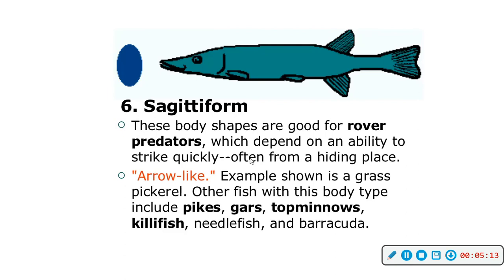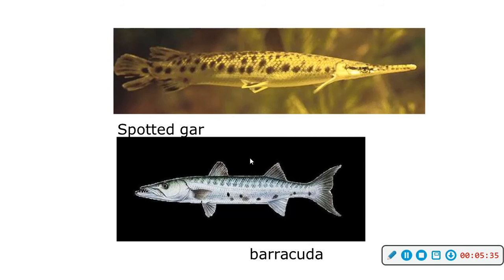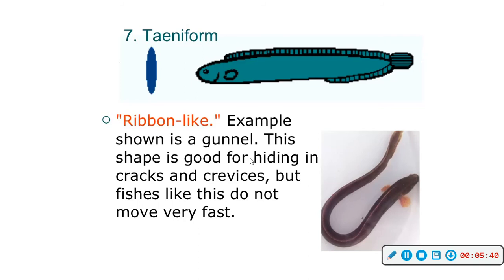Sagittiform body shapes are good for rover predators like barracudas, pikes, gars, and killifish. They have the ability to strike quickly and are arrow-like. Here's your spotted gar and your barracuda. Taeniform fish are ribbon-like — this includes your eels.